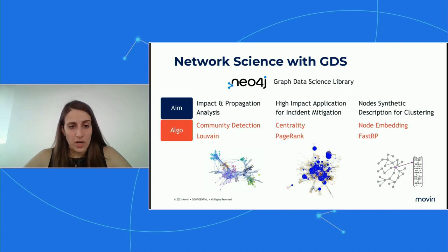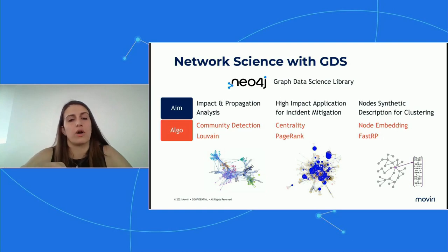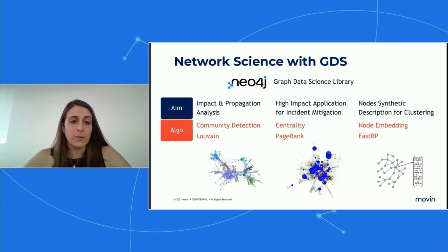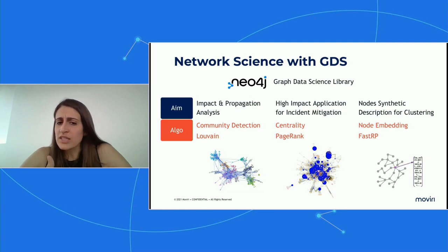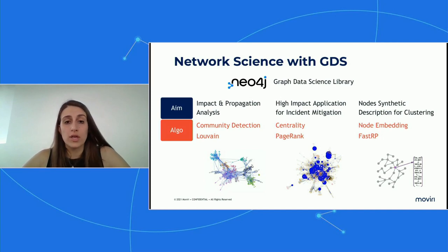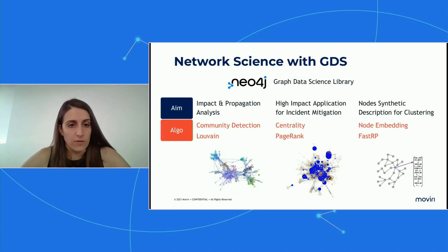The second use case is related to high-impact application identification for incident mitigation. We identified those applications that were more important and could have a broader impact if an incident affected them. We exploited centrality algorithms — specifically PageRank — to understand the hot spots of our graph and which applications someone needs to focus on. This helps in triggering actions such as incident prioritization, reprioritization, and specific investigations into the condition of the application itself.